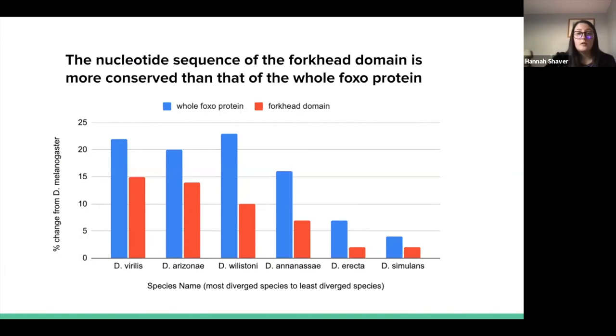To compare the conservation of the forkhead domain and total protein sequences, the nucleotide sequence of the total FOXO protein in the target species was compared to D. melanogaster. The forkhead domain sequence in the target species was also compared to D. melanogaster. The y-axis represents the percent change from the sequence within the target species compared to D. melanogaster, with the whole protein in blue and the forkhead domain in red.